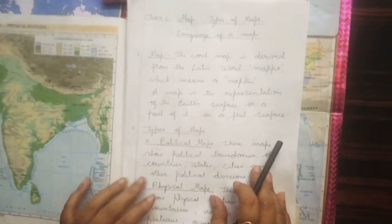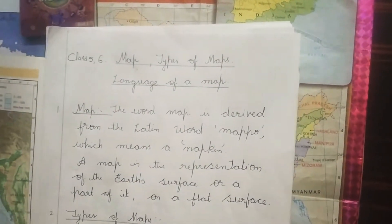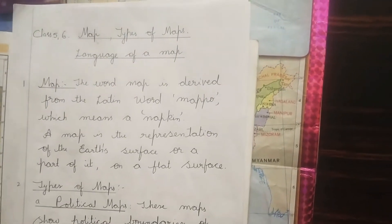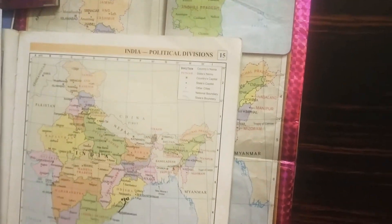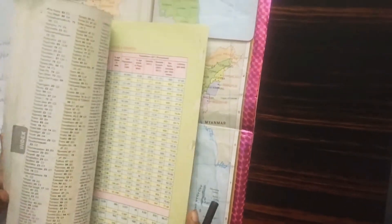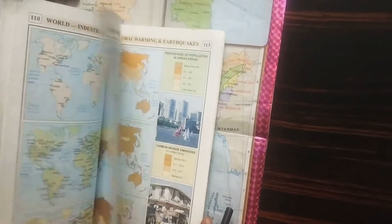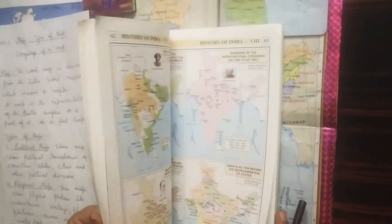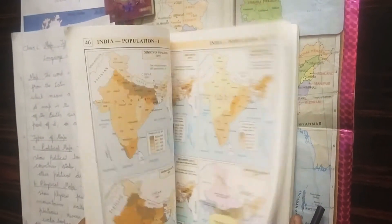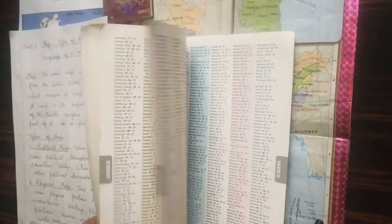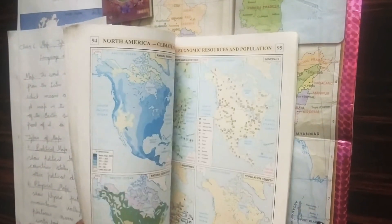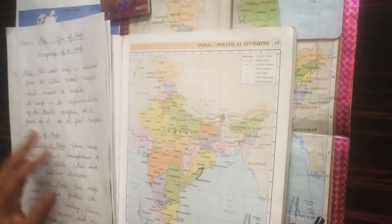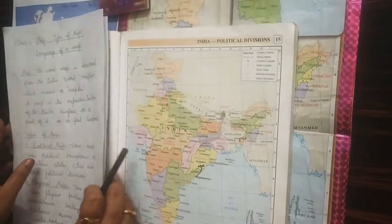Next topic is Atlas. A book of maps is called an Atlas. This is an example of an Atlas — it shows us political maps, physical maps, population maps, climate maps, agricultural maps, history maps and many other maps. It is called a book of maps.